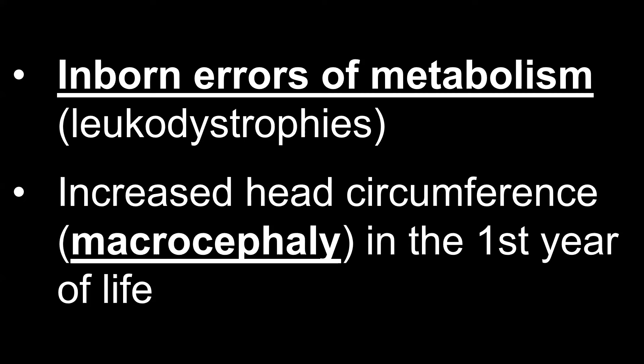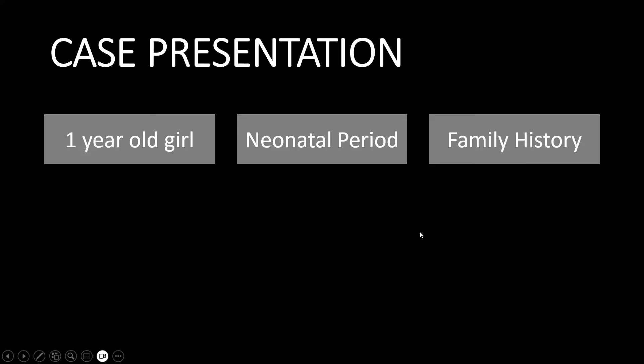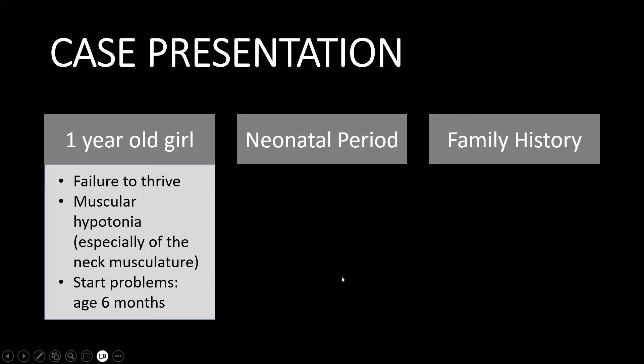These diseases still look a bit alike, but in this presentation I will show you the ways in which they differ on MRI so you can come to the right diagnosis. Let's start with the first case. The first patient I am going to present is a one-year-old girl who was brought to the pediatrician because of failure to thrive.